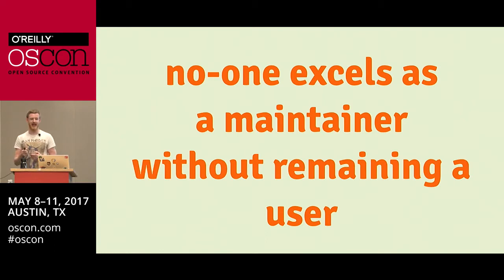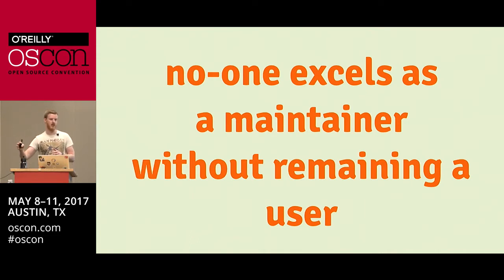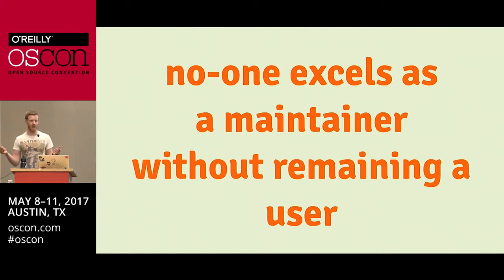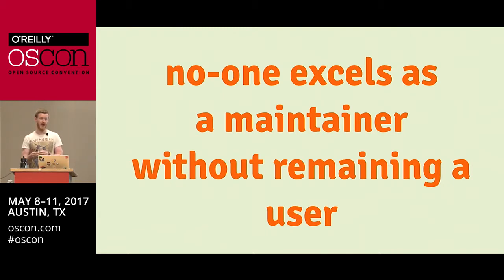And finally: no one can excel as a maintainer unless they remain as a user. You see a problem with some open source projects that have been around a while — they're creaking under the load because the original maintainer is not using the software anymore. Maybe they wrote it for some work problem they no longer have, or maybe they now write Node.js instead of Go. In those situations, that person is probably unable to be a really great maintainer anymore — which is another reason you want to find additional maintainers so the original can move on.